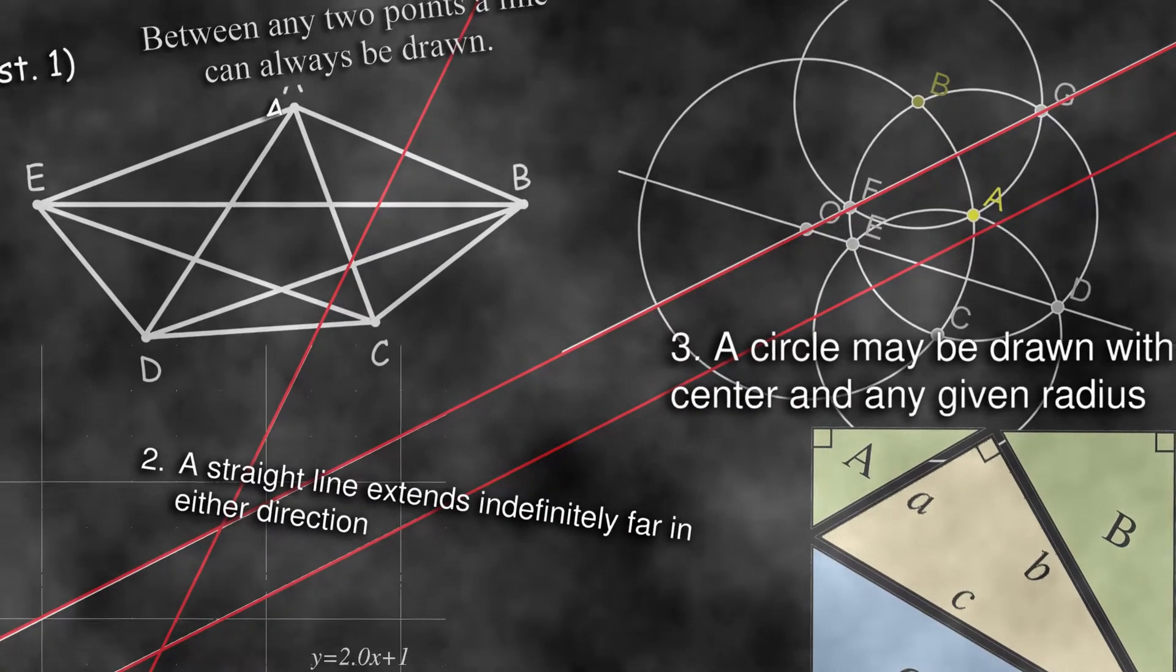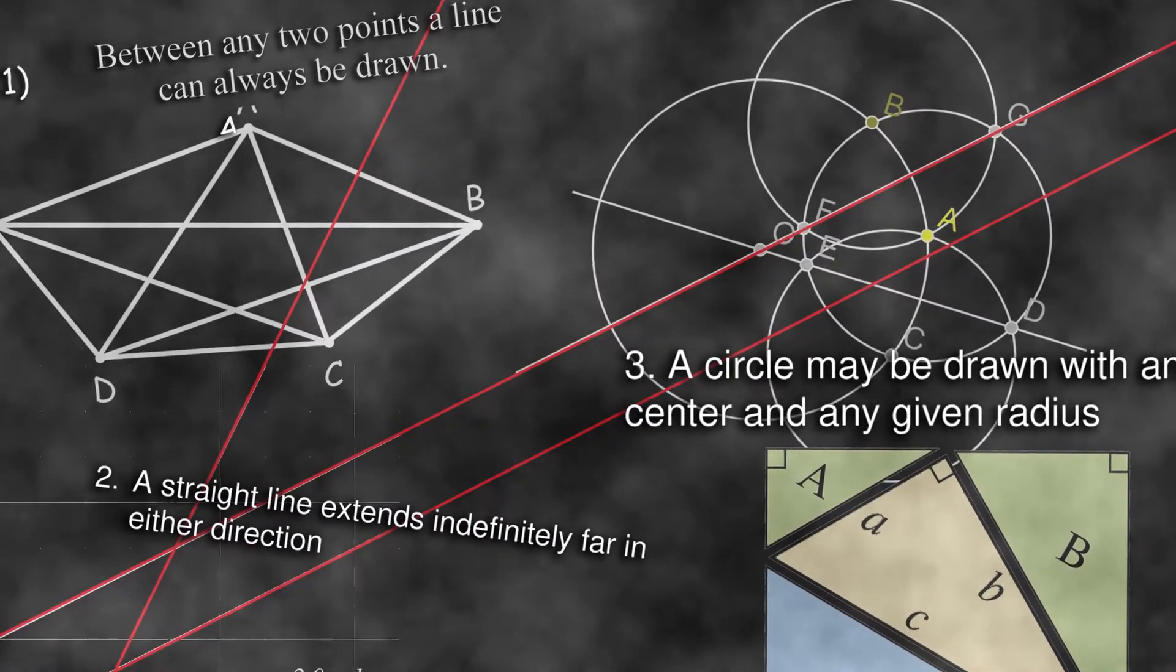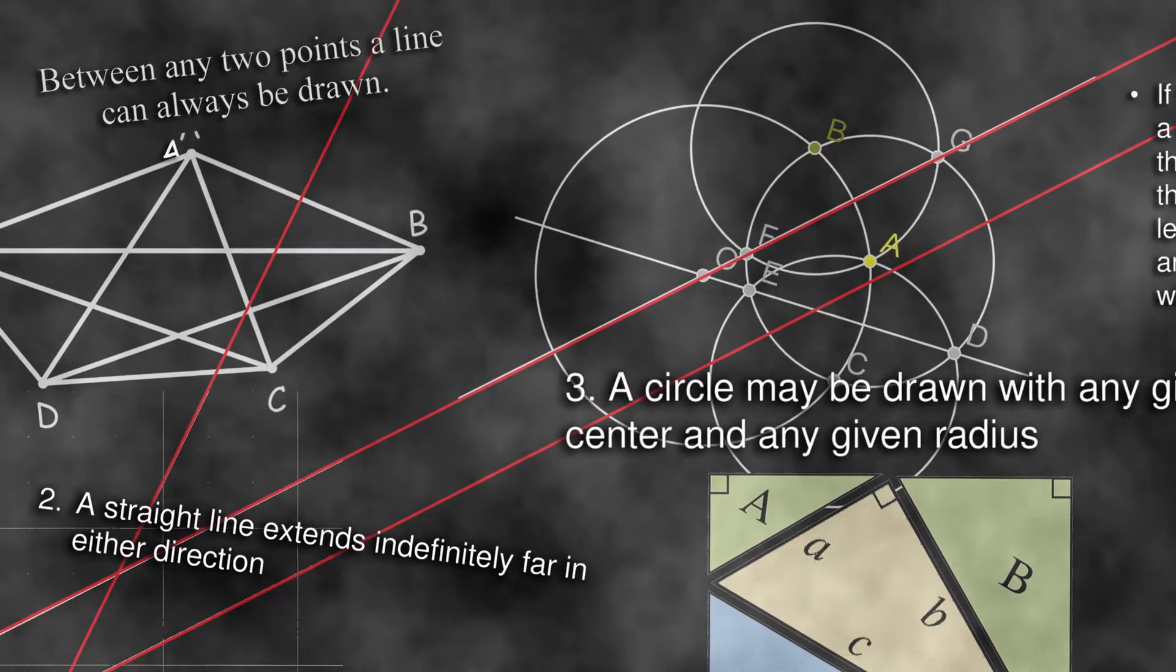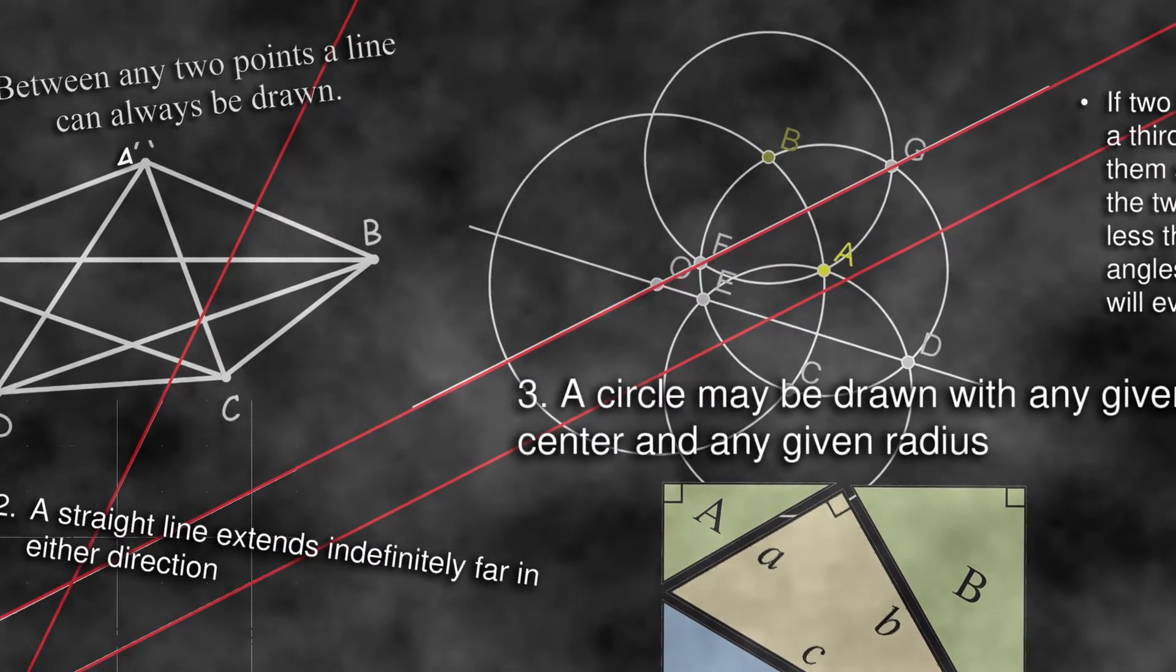4. All right angles are equal. 5. If part of a line crosses two other lines so that the inner angles on the same sides add up to less than two right angles, then the two lines it crosses must eventually meet.